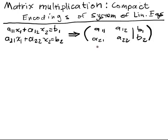Matrix multiplication — one way to motivate it is that we want another compact representation. We want an algebraic representation. I want something extremely simple that indicates that I have an A matrix, an x column, and a b column, and they're all related somehow — that I have some system of equations. So we're going to define matrix multiplication so that we can encode all this as just the simple equation Ax equals b.